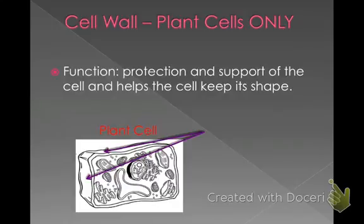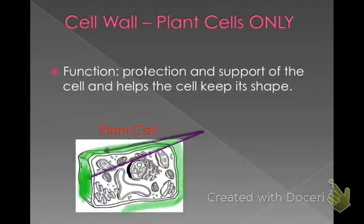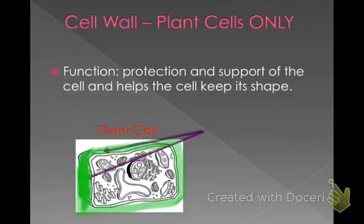The last organelle we're going to talk about is the cell wall, and this is again only found in plant cells. The cell wall is another layer outside of the cell membrane that is very rigid and helps the cell keep its shape, allowing each cell to build up on one another so the plant can continue to grow really tall and strong. Think about a tree — each one of those cells has to be very rigid and stay in place for that tree to grow higher and higher every year. Without that rigid cell wall and a full vacuole, the plant is not going to be able to grow tall.